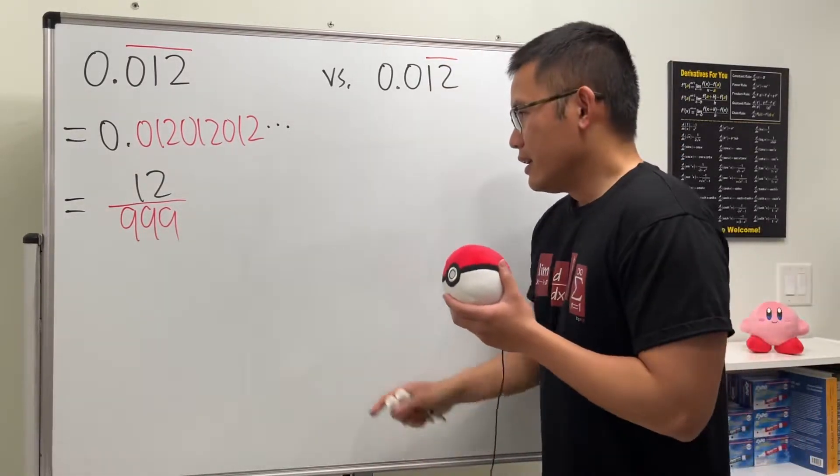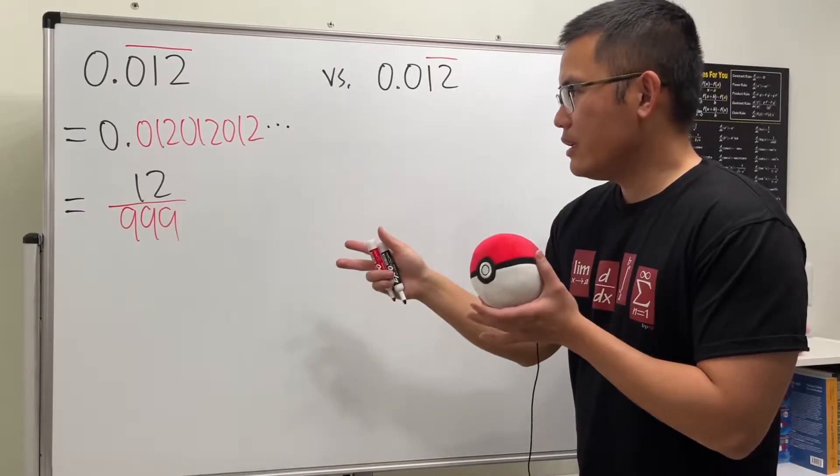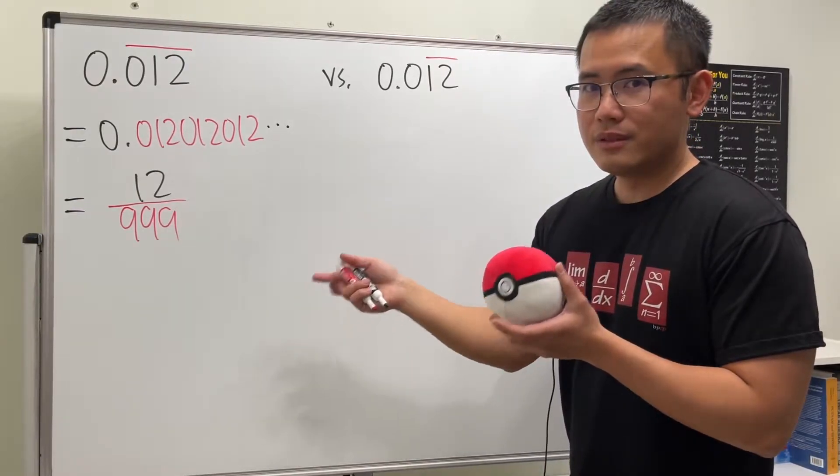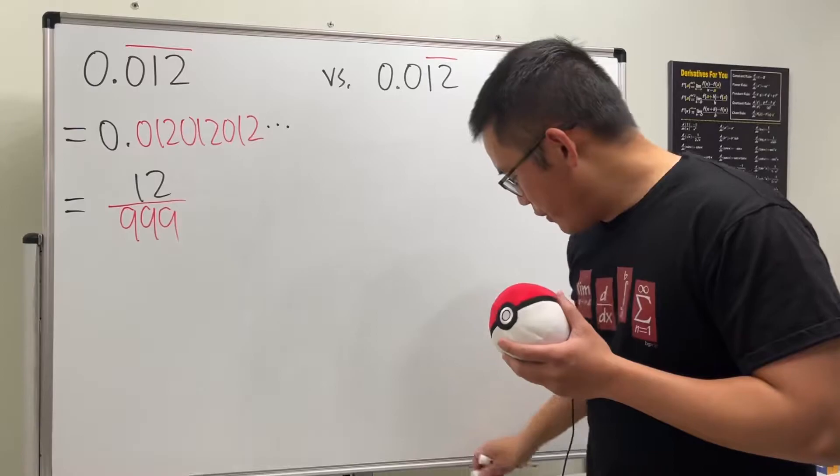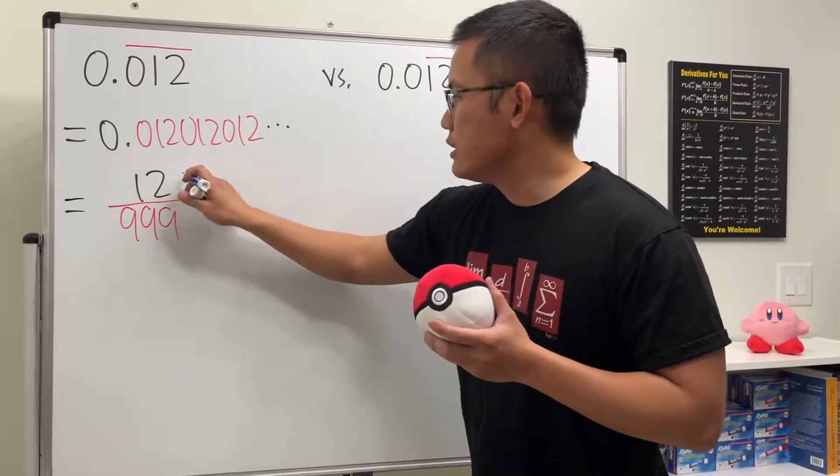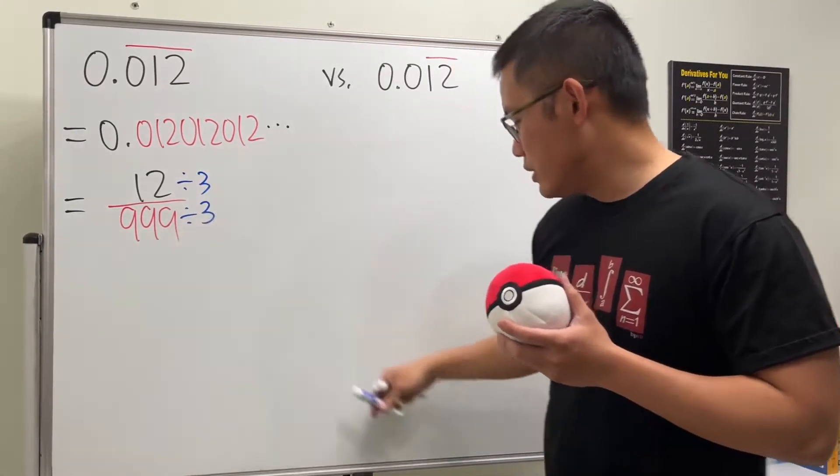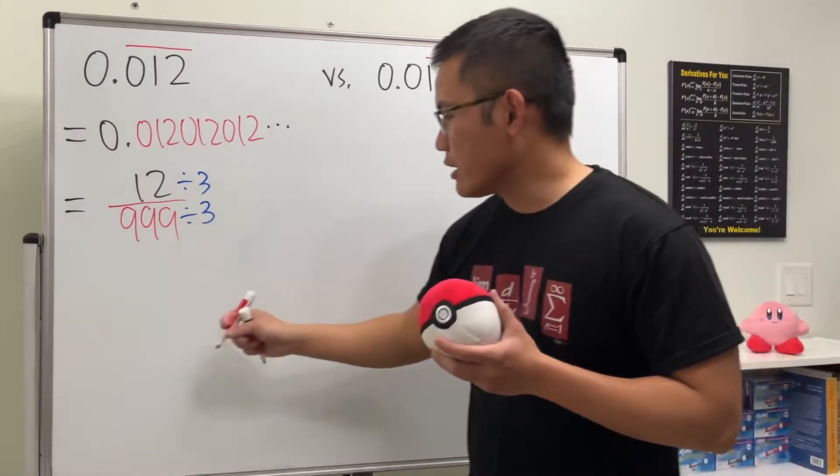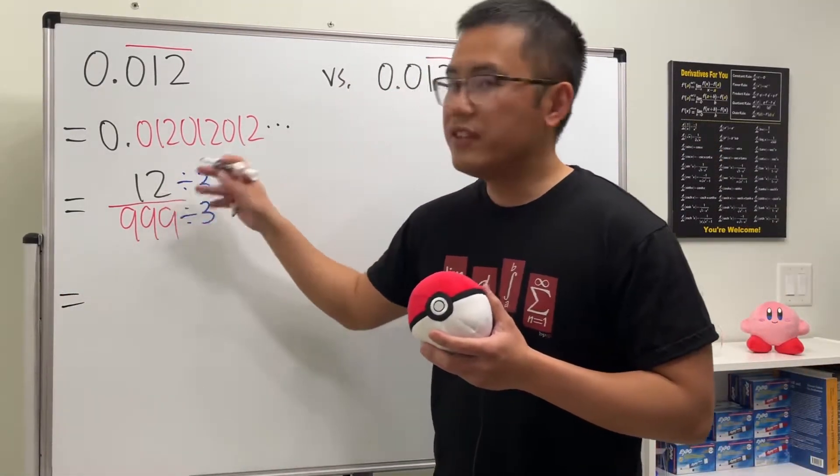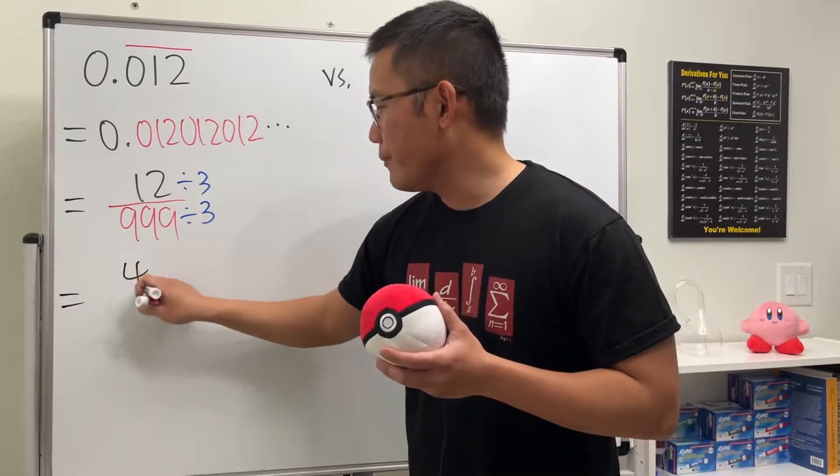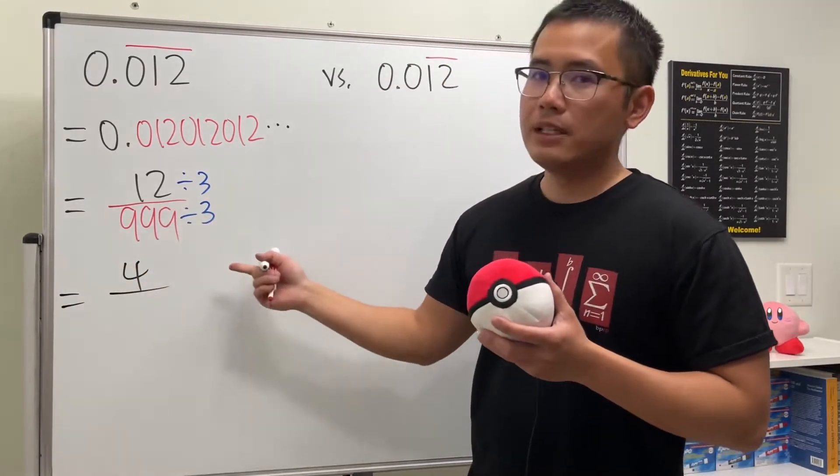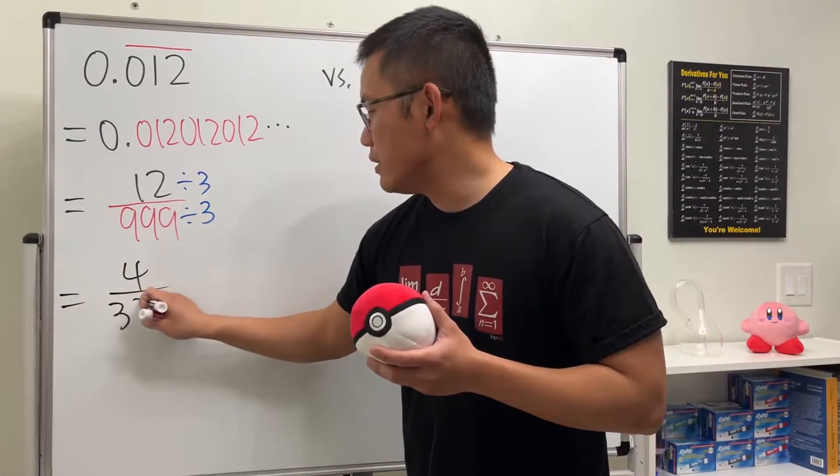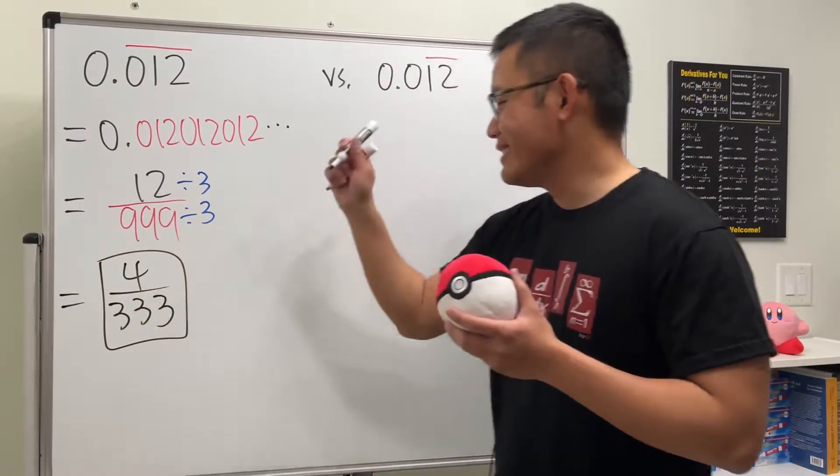So, how can we continue? Can we reduce this? Yes. 12 over 999, we can reduce this by 3. So let's divide this by 3 on the top and also on the bottom. And we see 12 divided by 3 is equal to 4. 999 divided by 3 is 333. And then we are done.